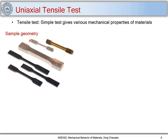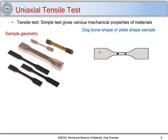This test is carried out on certain sample geometries — some are flat and some are cylindrical. The flat ones are also called dog bone shape samples. This region is called the shoulder of the sample, which is stretched uniaxially using a tensile force P. We are interested in the deformation between two points called gauge points, and the distance between them, L0, is called the gauge length.